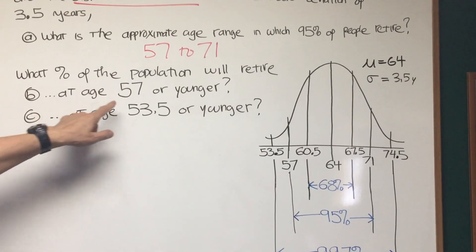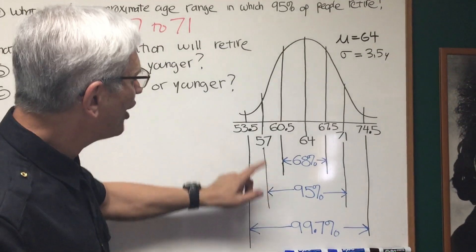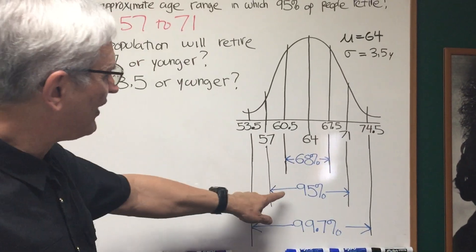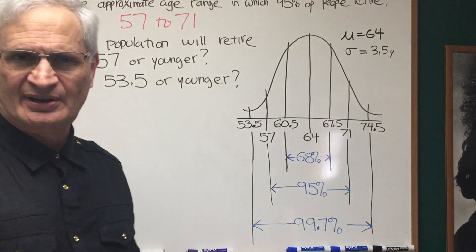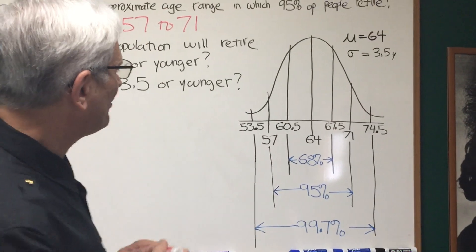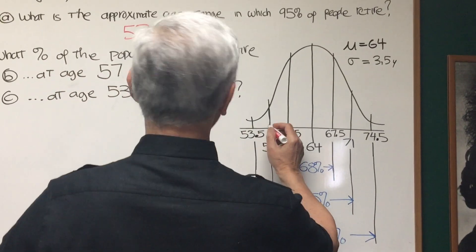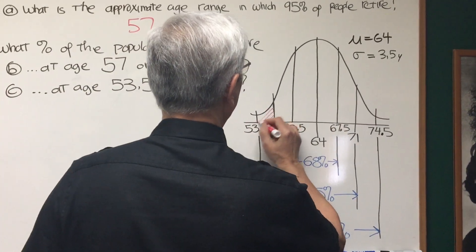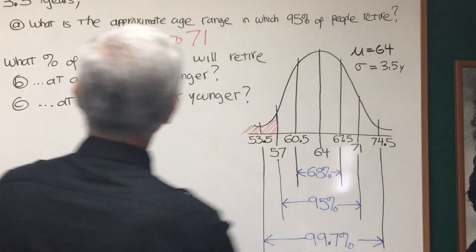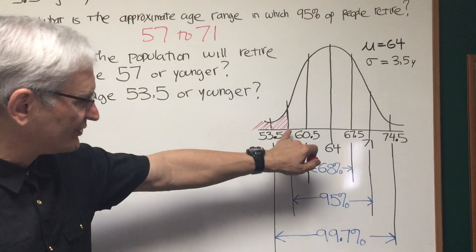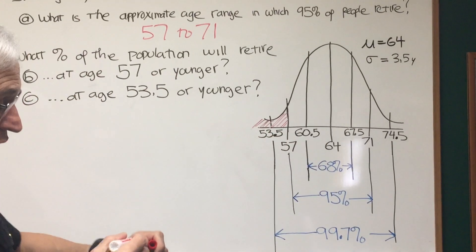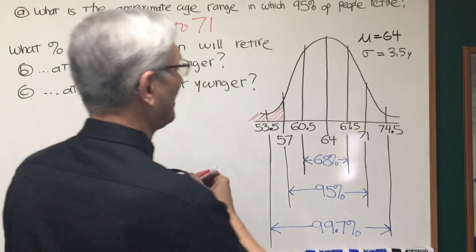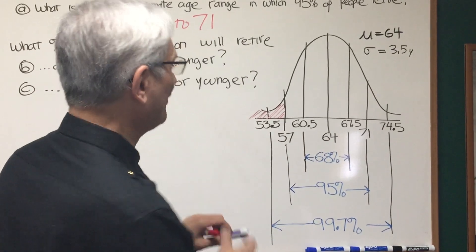Now let's go on to the next question. What percent of the population will retire at age 57 or younger? So 57 or younger falls within this category, within the 95% boundary on the standard normal curve. What are we looking for? Let's shade the area under the normal curve that we're looking for. We're looking for this area right there. 57 or younger, so here's the mark 57 or younger.